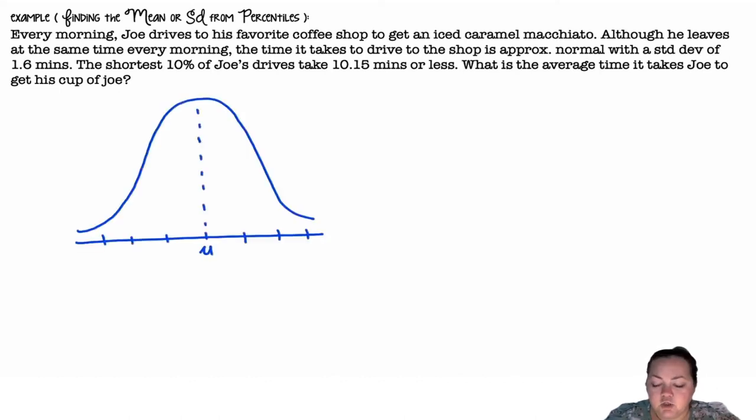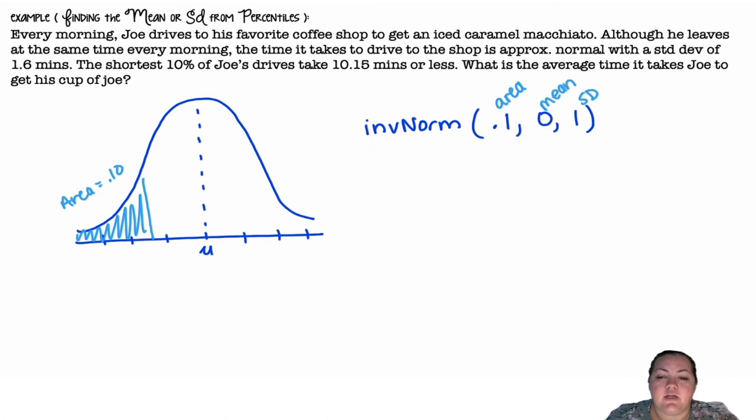So normal distribution, we don't know the mean. We know that the shortest 10% of drives go to 10.15 minutes. So I have area, mean, standard deviation. I'm going to find the z score. Because I don't know the mean and the standard deviation, I'm going to use the standardized, which is a mean of zero, standard deviation of one always for z scores. So the area is 0.1. That gives me a z score of negative 1.28.